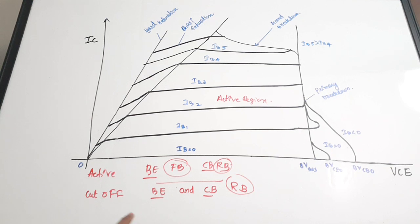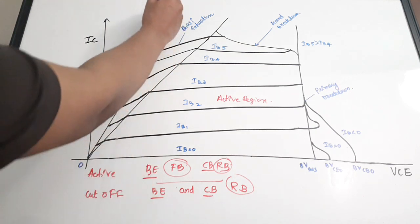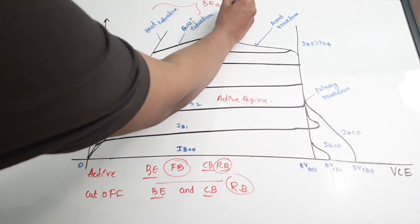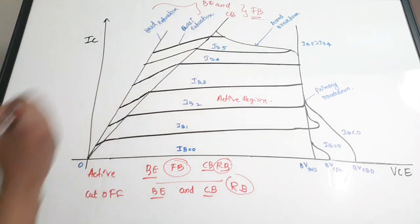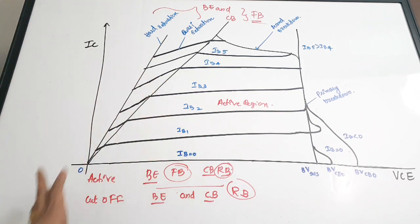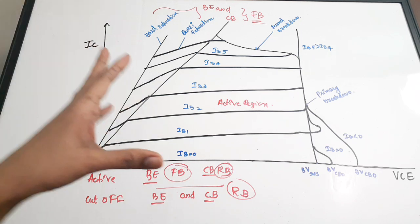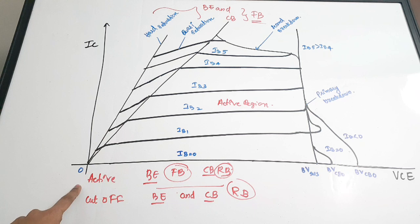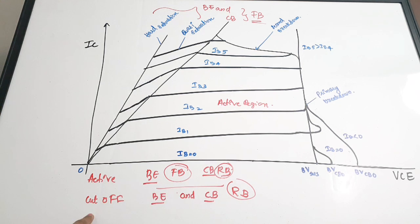For both quasi-saturation and hard saturation, the base-emitter and collector-base regions are both forward biased. These are the four modes of operation of a power BJT: active mode, cutoff mode, hard saturation, and quasi-saturation. For hard and quasi-saturation, both junctions are forward biased. For the active mode, the base-emitter is forward biased and the collector-base is reverse biased. For cutoff mode, both the base-emitter and the collector-base regions are reverse biased.